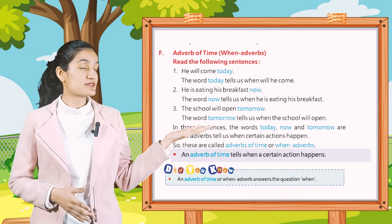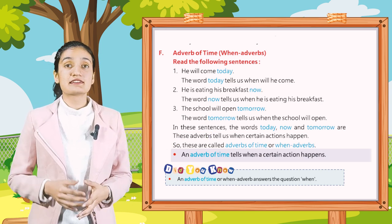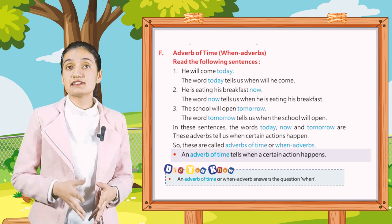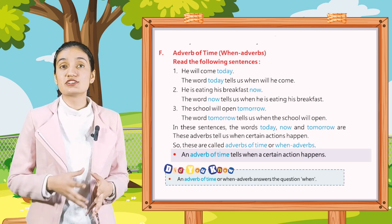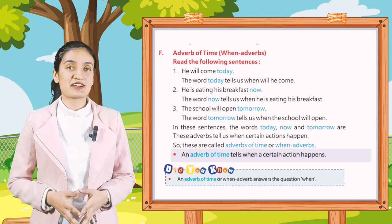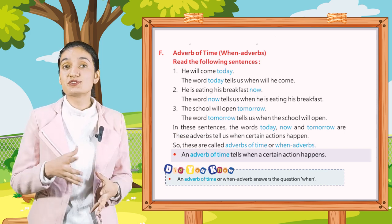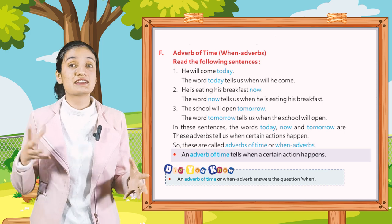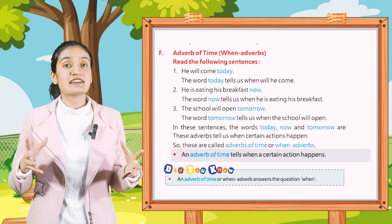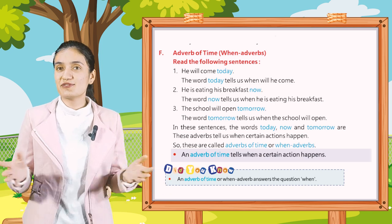First: He will come today — the word 'today' tells us when he will come. Second: He is eating his breakfast now — the word 'now' tells us when he is eating his breakfast. Third: The school will open tomorrow — the word 'tomorrow' tells us when the school will open. In these sentences, 'today', 'now', and 'tomorrow' are adverbs.